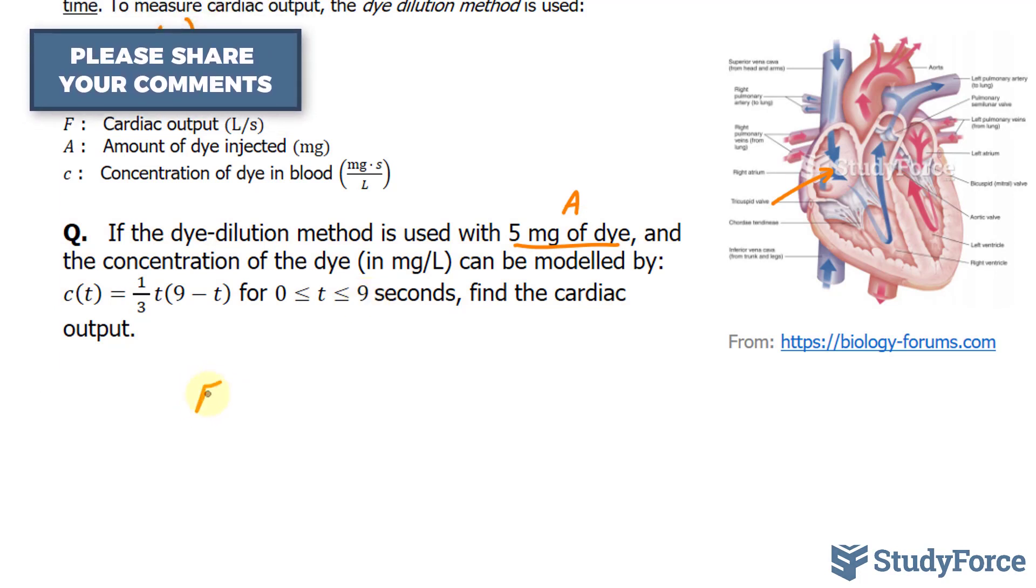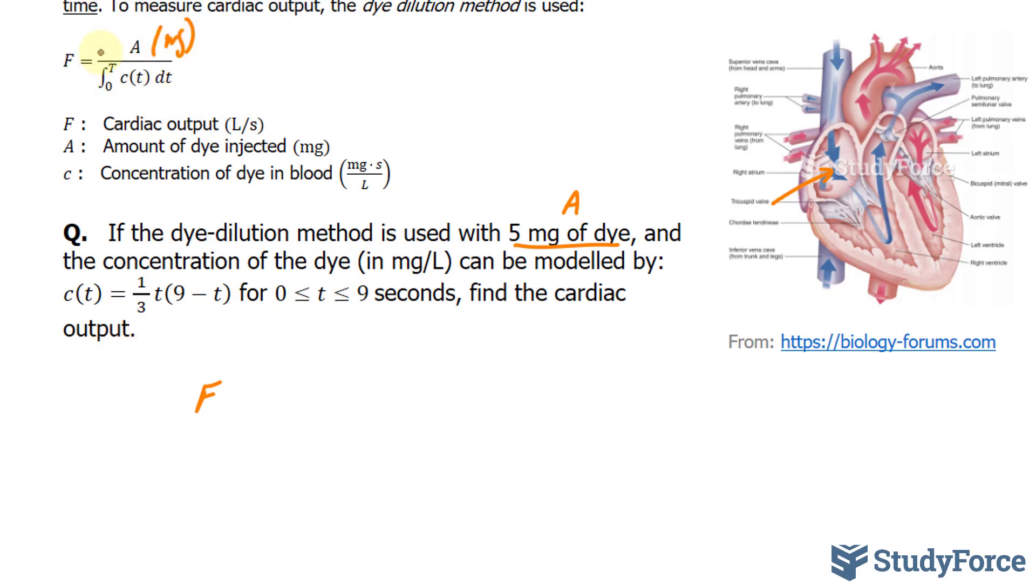All we have to do is find the integral of this function, substitute it into our equation, and we can find the cardiac output. So F is equal to 5 milligrams over, now we'll find the integral of this function. The integral between 0 and 9.